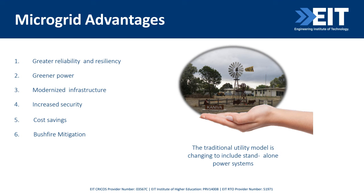The traditional utility model is changing to include standalone power systems, and microgrids have come in. The microgrid gives you: higher reliability, greater resilience, greener power, modernized infrastructure, increased security, cost savings, reduced energy prices, and mitigation of bushfire. These are some of the things happening as we talk about it.